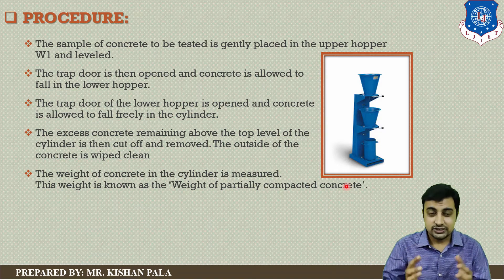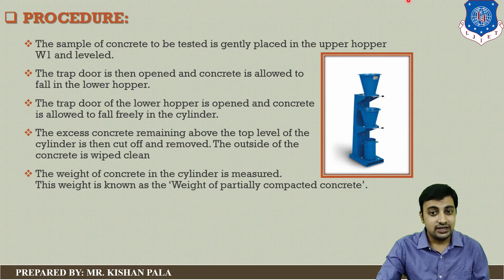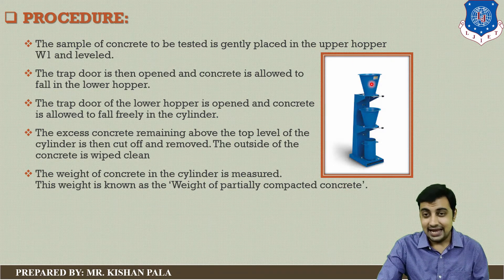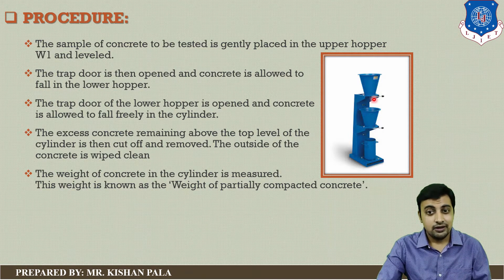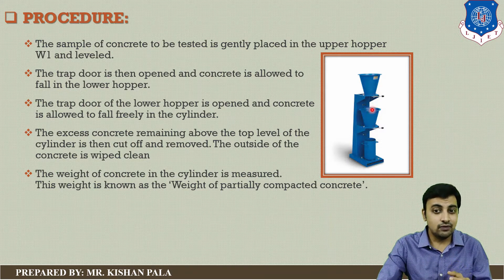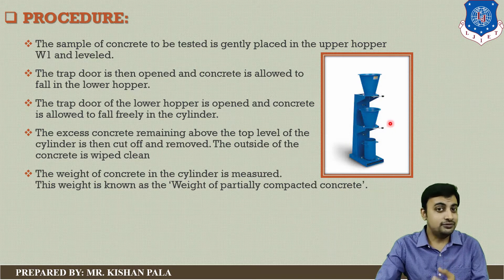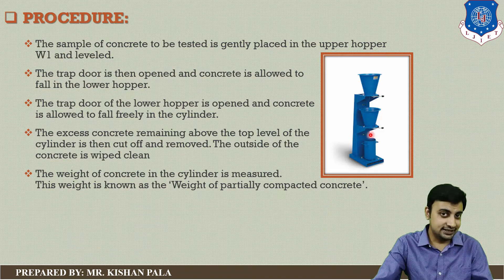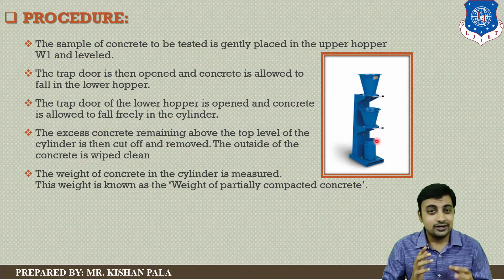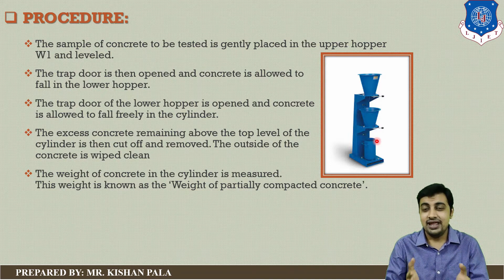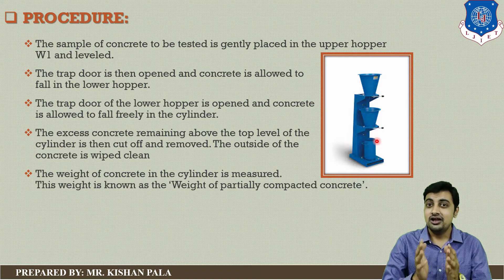To repeat the process: take the sample of concrete mass and fill it in the upper hopper. After filling the upper hopper, open the trap door to allow the concrete to fall into the lower hopper with its own weight. Then open the trap door of the lower hopper and allow the concrete to fall into the cylindrical mould. Now we have partially compacted concrete. Weigh it to get the weight of partially compacted concrete.